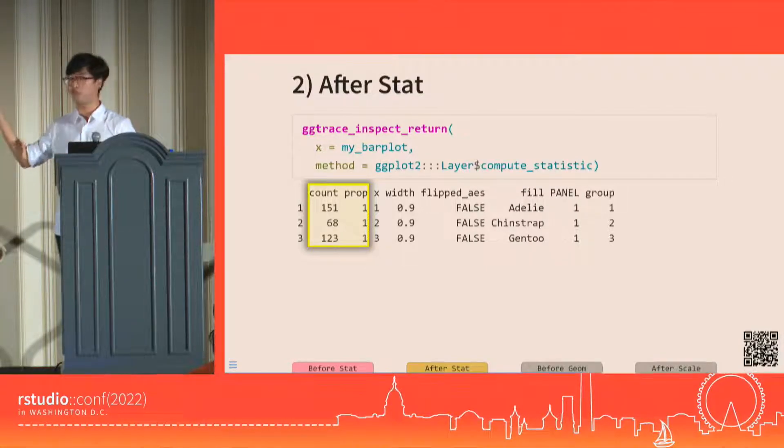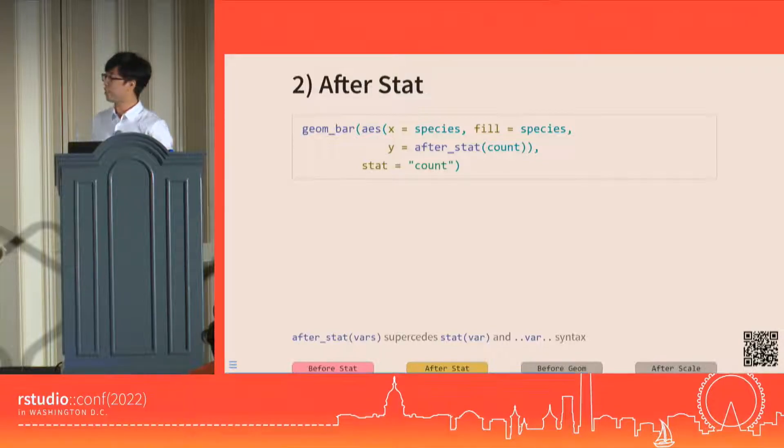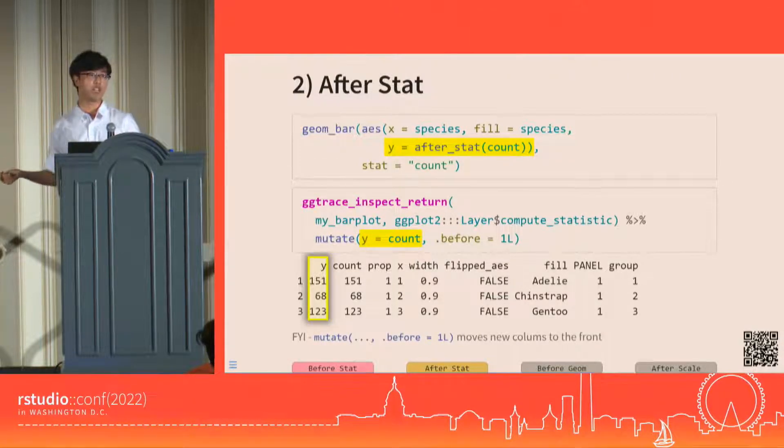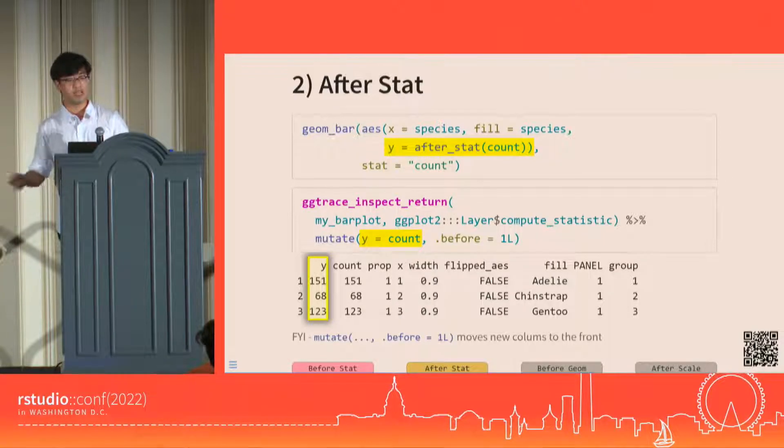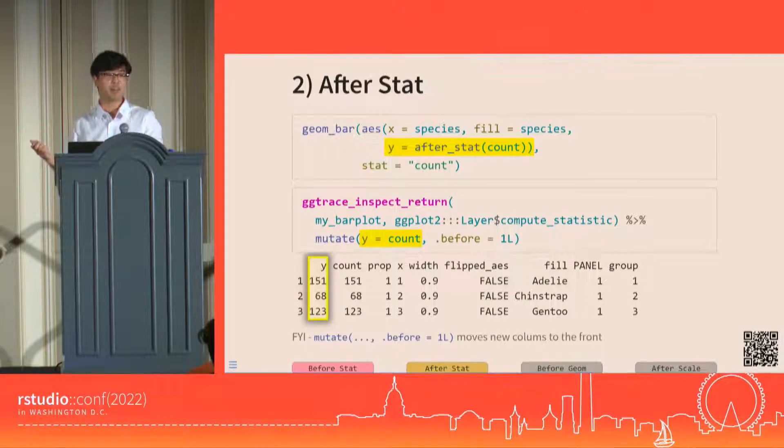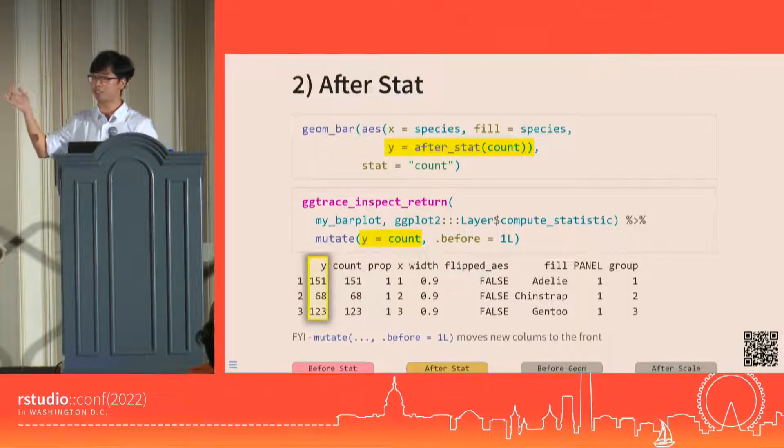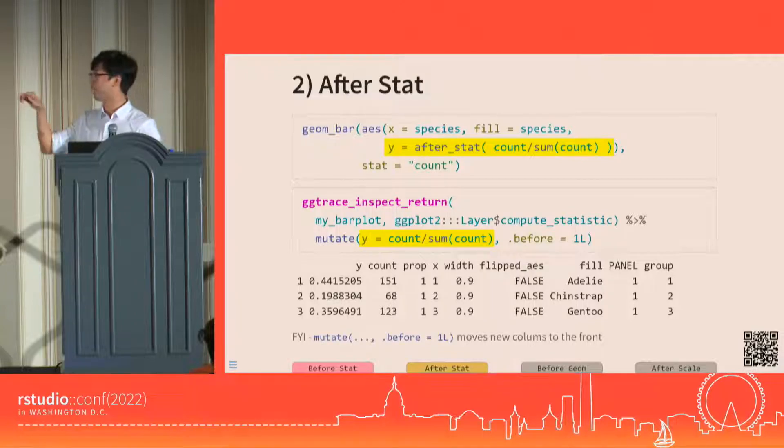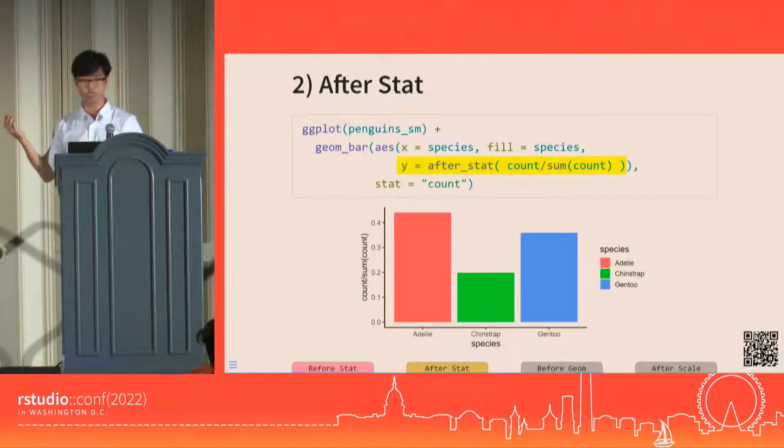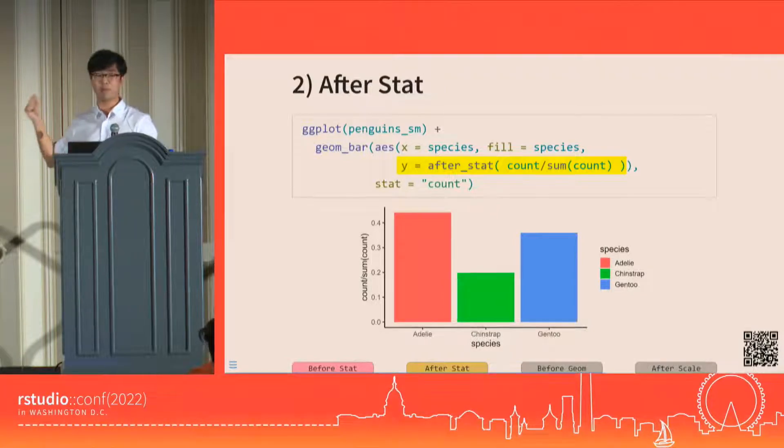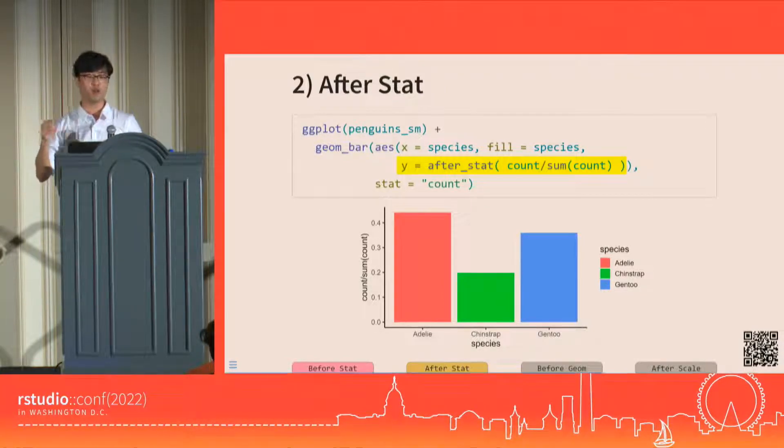The after stat stage is significant because it's an opportunity for us to declare more aesthetic mappings except we can use variables from this after stat data frame. The fact that we have a column called count in the after stat data is what allows this default mapping of y equals after_stat(count). That's essentially just calling mutate y equals count on the after stat data. This isn't just a metaphor. Aesthetic mappings are literally powered by tidy eval. The symbol count is evaluated to the vector count. You can do things like y equals count over sum of count, which will give you proportions and have consequences down the line for the plot.